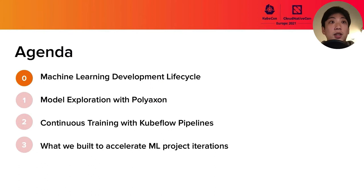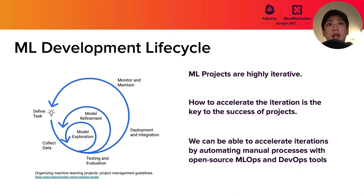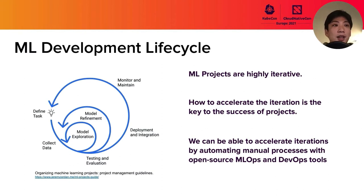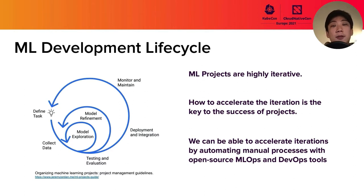Let's move on to the first part: machine learning development lifecycle. Generally speaking, machine learning projects are highly iterative. First, we need to decide the task to solve with ML. Once we decide the task, we will start collecting training data. When we get enough training data, we can start the model exploring phase. Through the model exploring phase, we decide the first model to deploy to production. And then we can start developing a microservice to deploy a model and integrate the microservice with other systems.